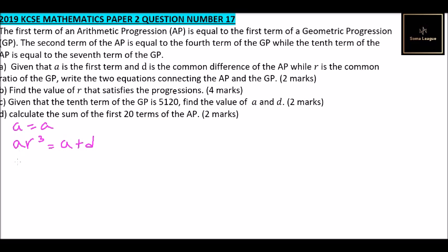The tenth term of the GP is written as a·r⁹, and this equals the seventh term of the AP. The seventh term of the AP is a + 6d, and the tenth term of the AP is a + 9d. So given that a is the first term, d is the common difference of the AP, and r is the common ratio of the GP, we write the two equations connecting AP and GP. We can say this is Part A.